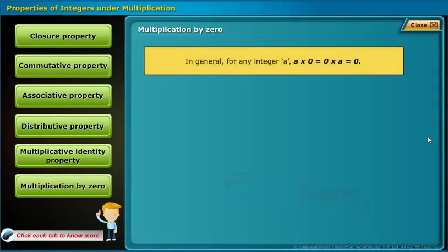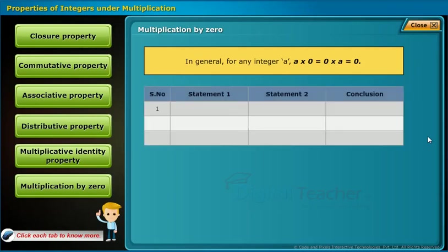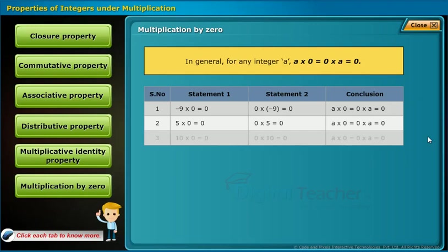Multiplication by 0 property defines that for any integer a, a into 0 equals 0 into a equals 0. For example: minus 9 into 0 equals 0, and 0 into minus 9 equals 0. The same holds for the second and third statements. Therefore, the table follows multiplication by 0 property.